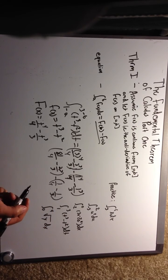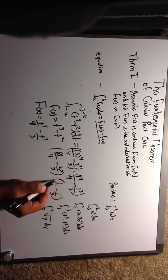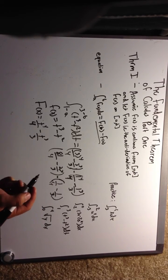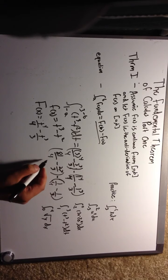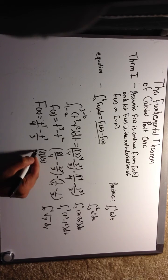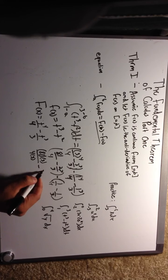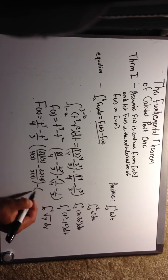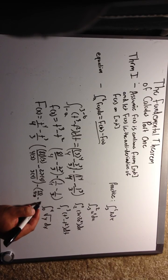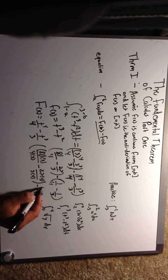Now this is the important part — this is where your algebra and arithmetic come in. We need to get common denominators. The common denominator here is going to be 12. So it's going to be 81 times 3 over 4 times 3, minus 27 times 4 over 3 times 4, minus 1 times 3 over 4 times 3, plus 1 times 4 over 3 times 4.